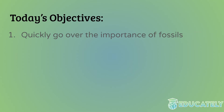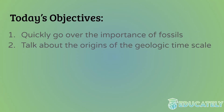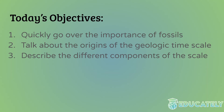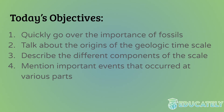Today's objectives: first, we're going to quickly go over the importance of fossils. It's important to know details about fossils if you want to get a better understanding of the origins of the scale, because they are heavily intertwined topics. We're going to talk about the actual origins and how it came into being and its importance. We're going to describe the different components of the scale, such as how to read the scale properly and why it's organized the way it is. We're going to mention important events that have occurred at various parts of the scale. The scale is divided into different eras and periods, sometimes based on historical events such as mass extinctions or the emergence of certain species. So we're just going to talk about which species emerged at what times and different events that mark the end of certain eras.